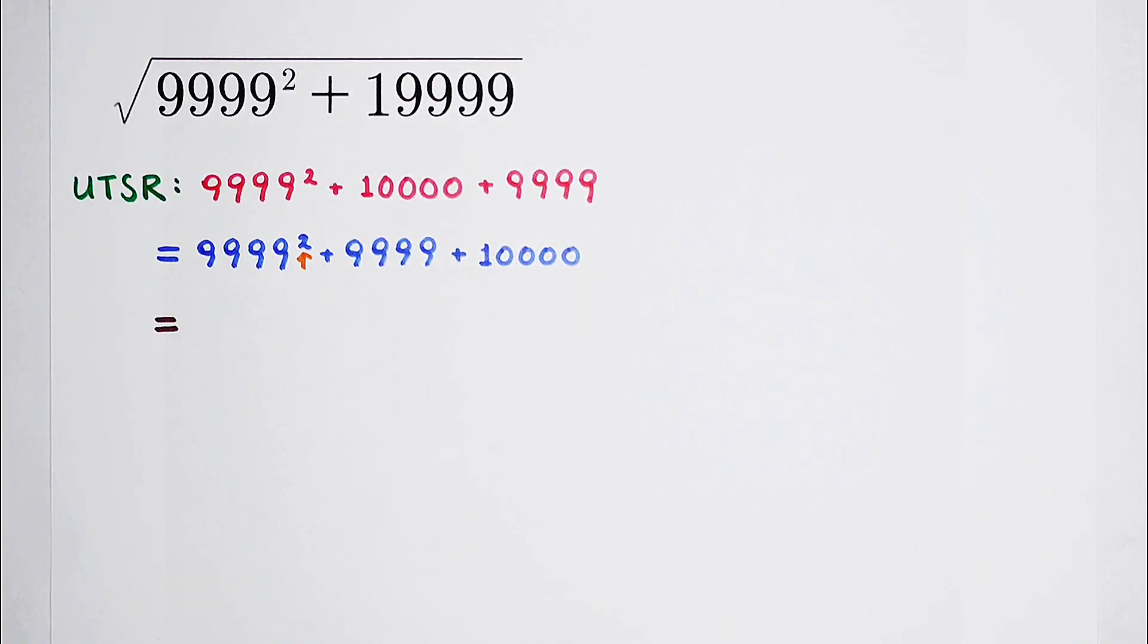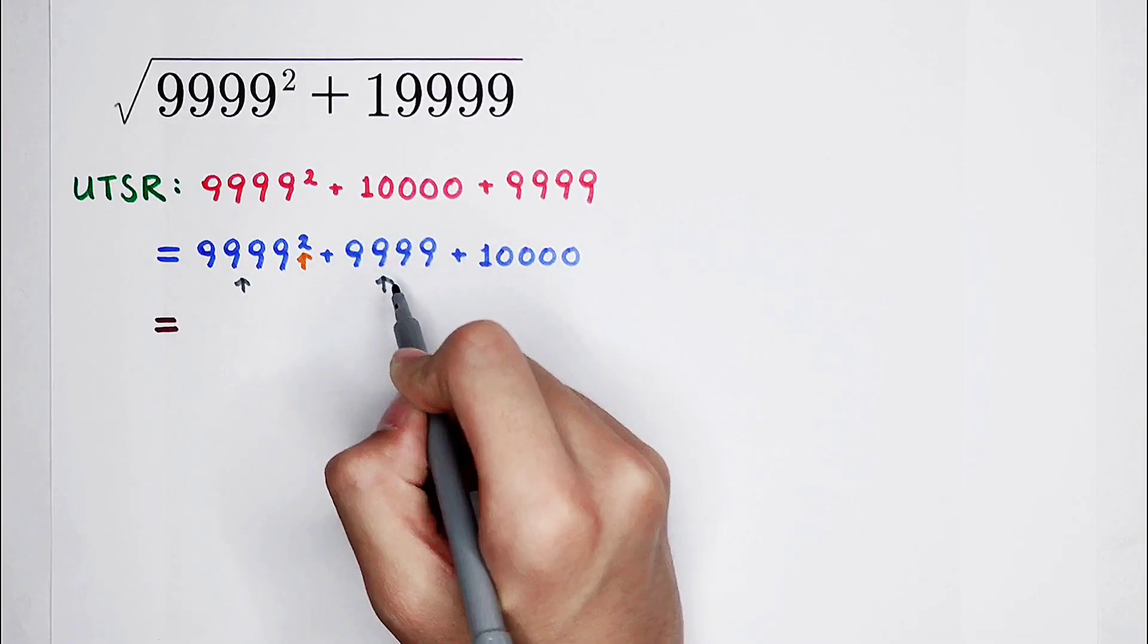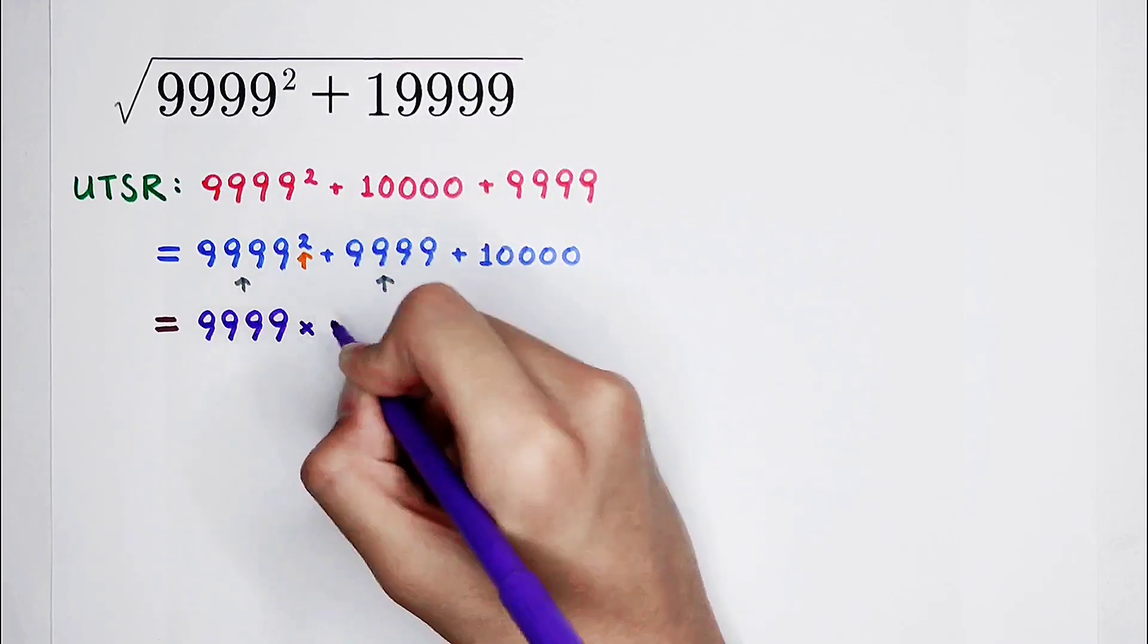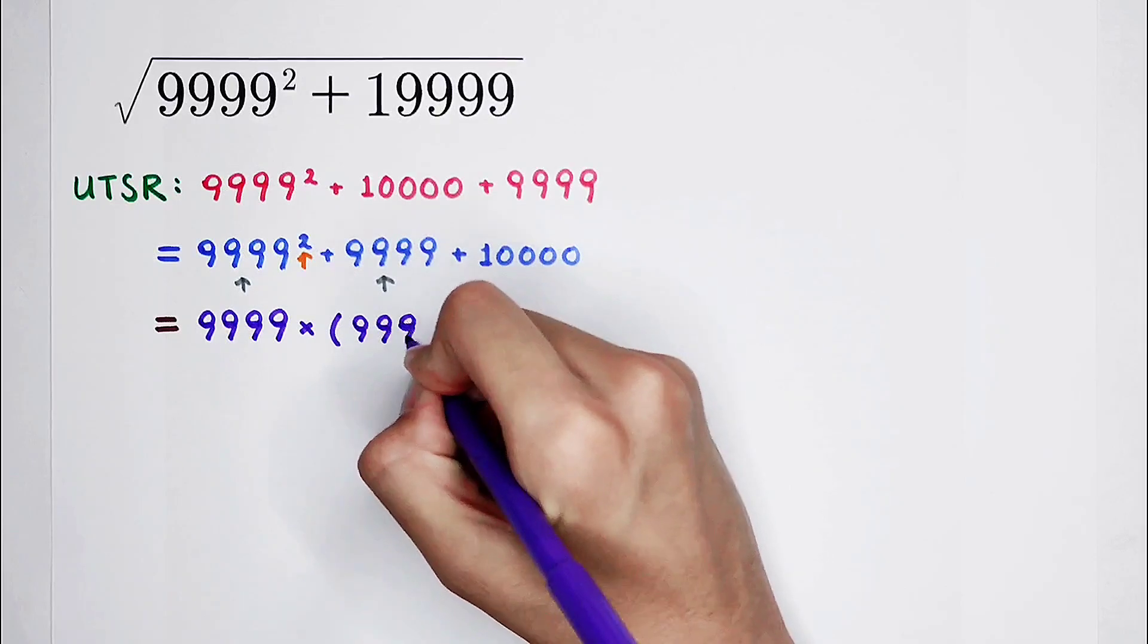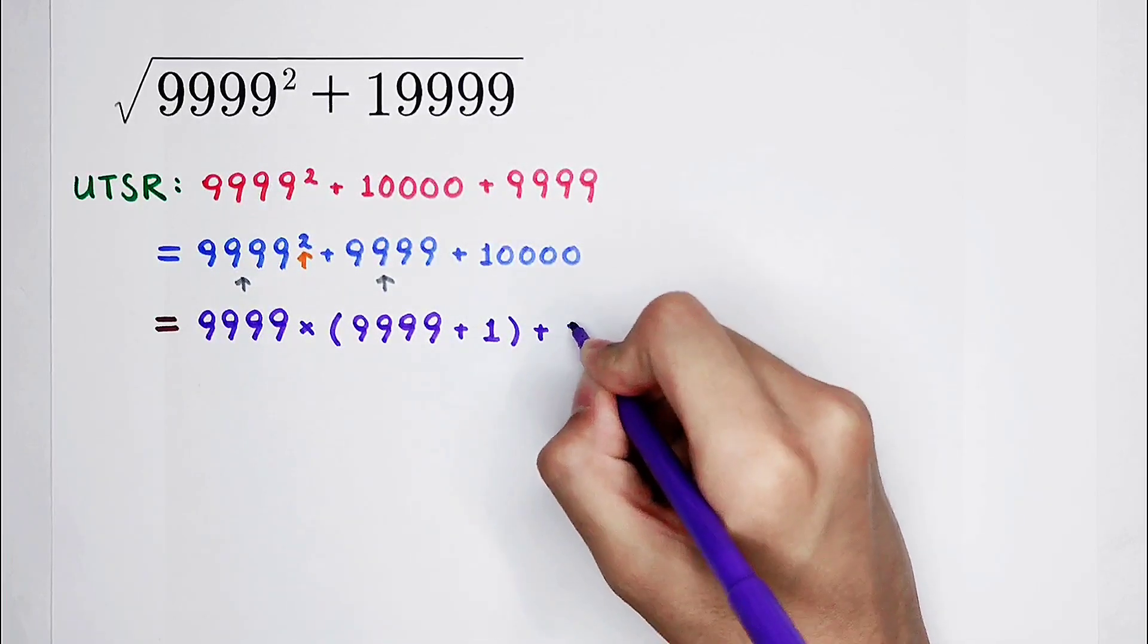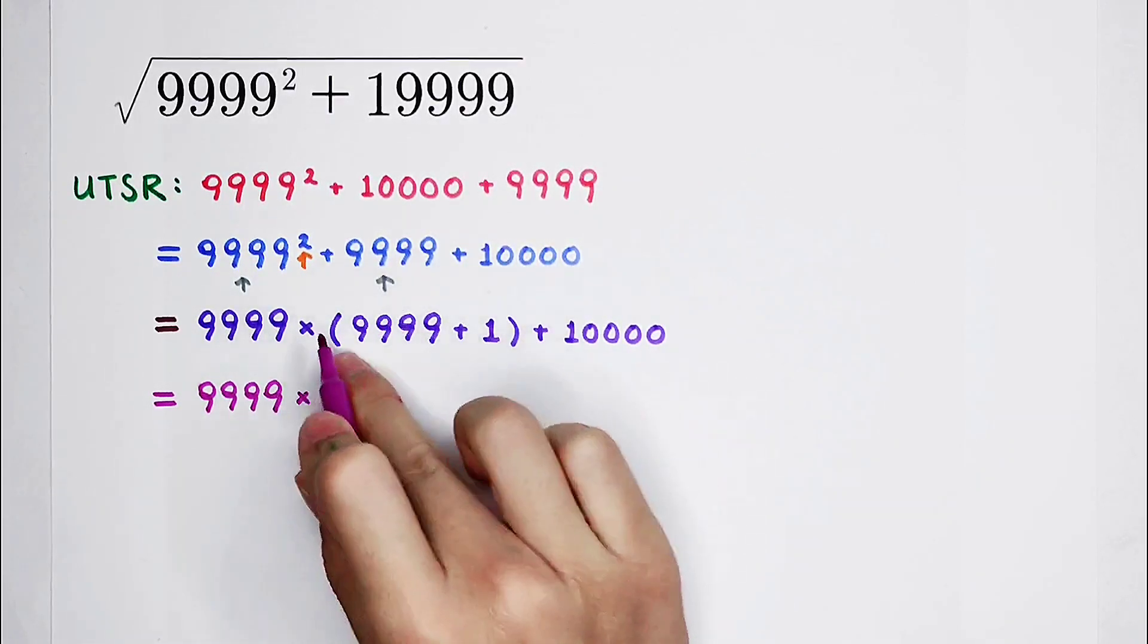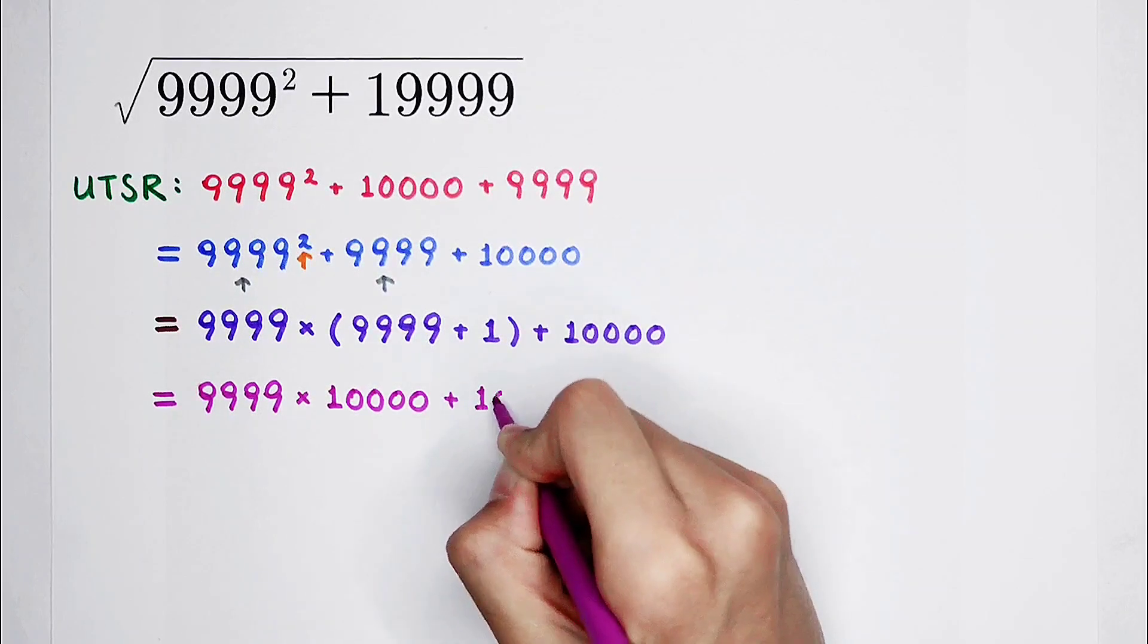So what should we do? So, of course, we can take out a 9999 from these two sections. 9999 times 9999 squared and then divided by 9999, it is 9999. And then plus 9999 divided by 9999, it is 1. And here we add 10000. It is 10000, and here is 10000 as well.